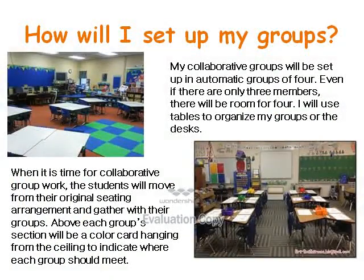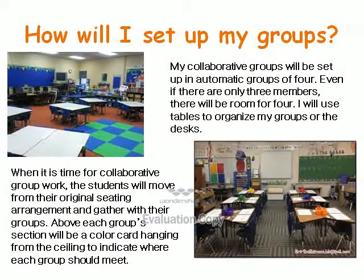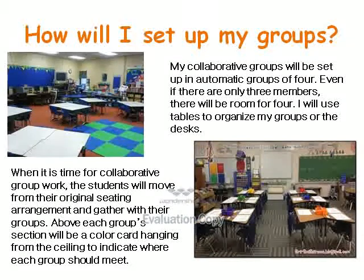Of course, the students need space to work. My collaborative groups will be set up in automatic groups of four, even if there are only three members — there will be room for four. I will use tables or desks to organize my groups. When it is time for collaborative group work, the students will move from their original seating arrangement and gather with their groups. Above each group section will be a color card hanging from the ceiling to indicate where each group should meet.